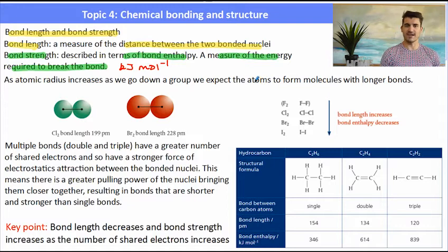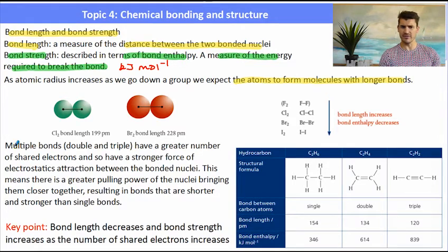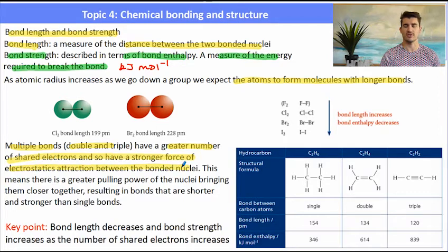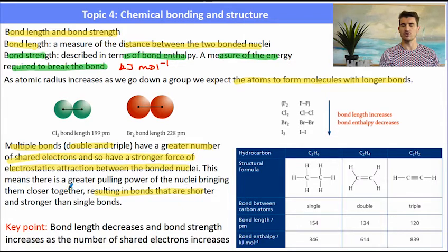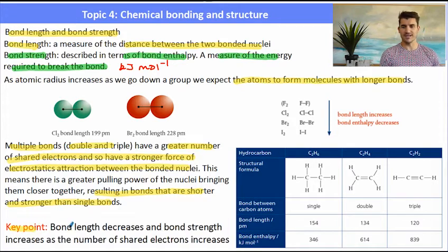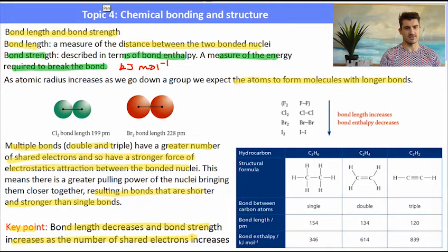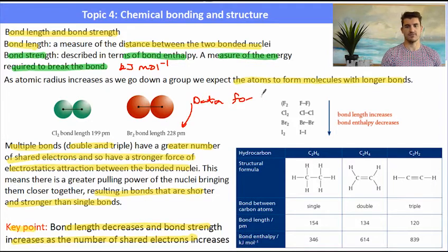As the atomic radius increases as we go down a group, we expect the atoms to form molecules with longer bonds — and that's exactly what happens. However, if we have multiple bonds — double or triple bonds — there's a greater force of attraction between the nuclei and the shared electrons. So that electrostatic attraction pulls them closer, which results in bonds that are both shorter and stronger than single bonds. The key point is: bond length decreases and bond strength increases as the number of shared electrons increases. You can find information for bond lengths and bond strengths from the data book.